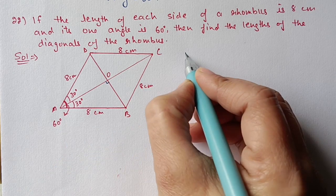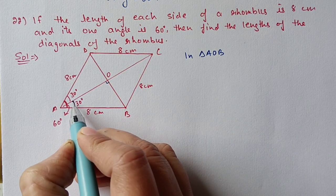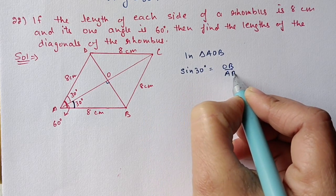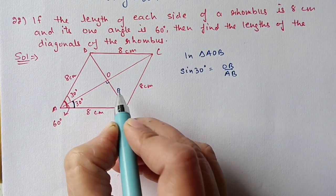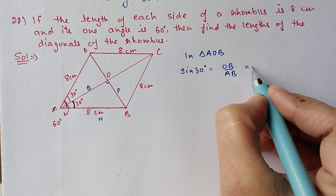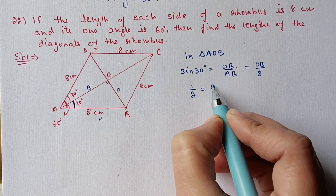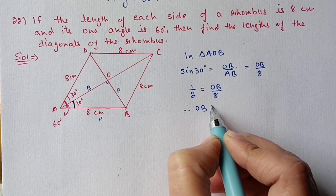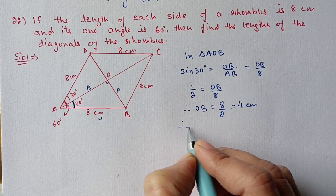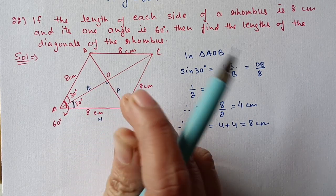We will focus on triangle AOB. For angle 30 degrees, sin 30° equals OB upon AB. The perpendicular is OB and the hypotenuse is AB. sin 30° = OB/AB, so 1/2 = OB/8, giving OB = 4 cm. Therefore BD = 4 + 4 = 8 centimeters, because the diagonals bisect each other.